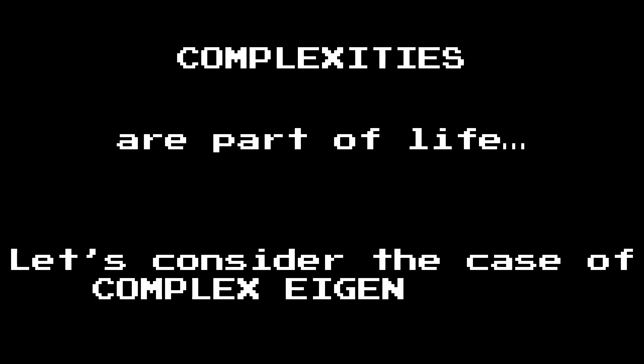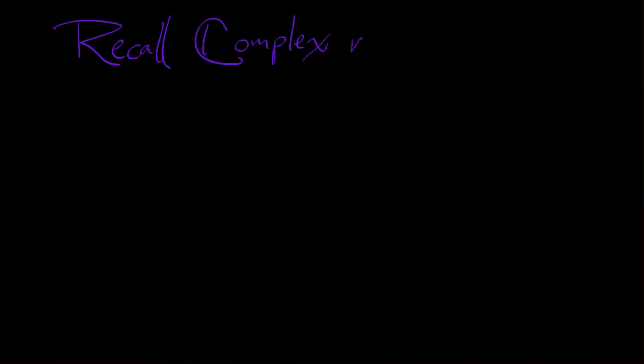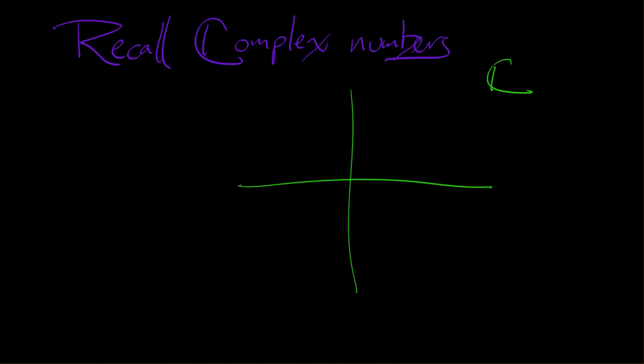Things can get a bit more complex — by which I mean you can have complex eigenvalues, and that gets a little interesting. Let's talk for a moment about complex numbers. You all recall what complex numbers are: you've got the complex plane with the real axis and the imaginary axis, and points in the complex plane have a real and imaginary component.